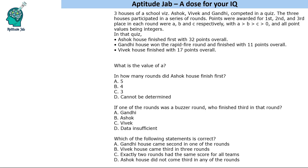We are given a very small set with just three pieces of information: Ashok house finished with 32 points overall; Gandhi house won the rapid fire round and finished with 11 points overall; Vivek house finished with 17 points overall.